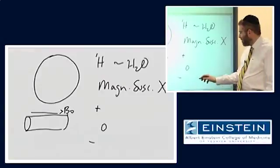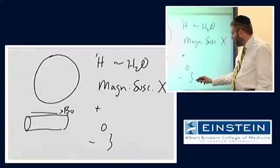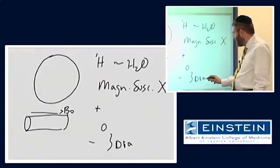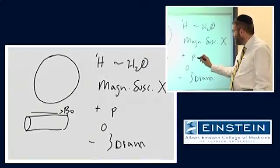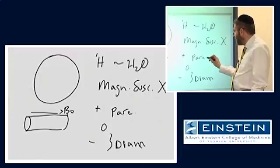Magnetic susceptibilities that are negative are things that we call diamagnetic. When magnetic susceptibilities are positive, we call this paramagnetic.